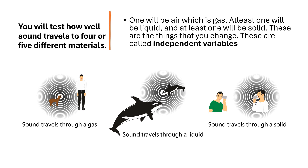These are the things that you change — these are called independent variables. In the first picture, sound travels through a gas. In the second, sound travels through liquid. In the third, sound travels through solid.